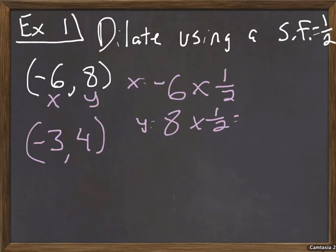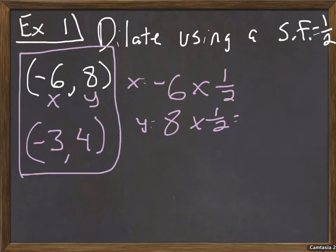Now, if you're going to dilate a shape using a specific scale factor, make sure you label, list all the ordered pairs from the coordinate plane, the vertices, and do this. It's all about manipulating the points.